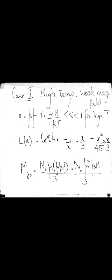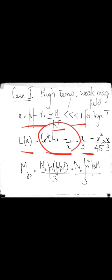We now consider two cases. Case 1: high temperature and weak field. Here x = beta*mu*H = mu*H / kT is much less than 1 when T is large and H is small. The Langevin function expands as L(x) = coth(x) - 1/x = x/3 - x^3/45 - ..., and taking the first term, L(x) ≈ x/3. Substituting into M_z0: M_z0 = n_0 * mu * (mu*beta*H / 3) = n_0 * mu^2 * beta*H / 3.